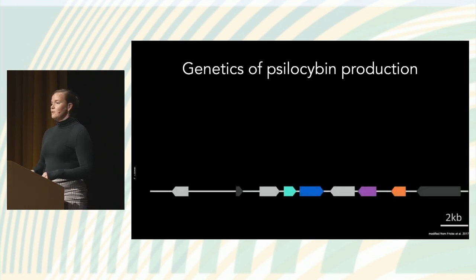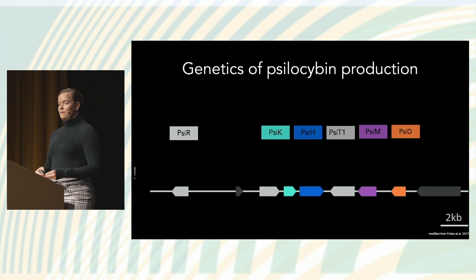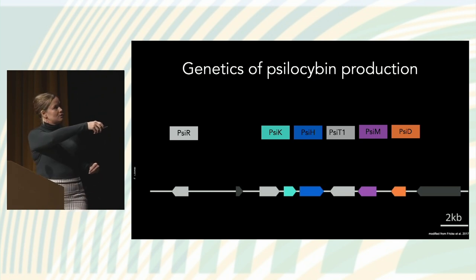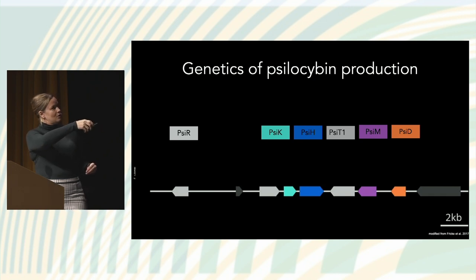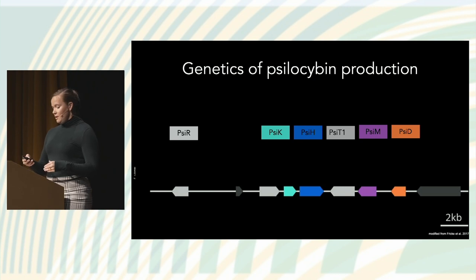Fungal genome sequencing has also allowed us to understand and develop new medicines, including making psilocybin in vitro. Here I'm showing you the PSI gene cluster. These genes have names that start with PSI for psilocybin biosynthesis — this is work from the lab of Frick et al., in a paper from 2017. These colored beads on a string are our genes, and the string is the background genome. The gene names correspond to genes in this gene cluster, and they're physically clustered because they contribute to an iterative process of creating psilocybin.